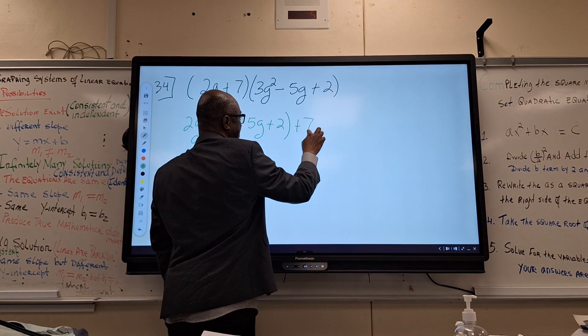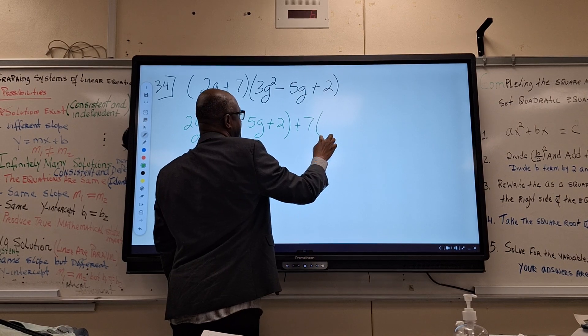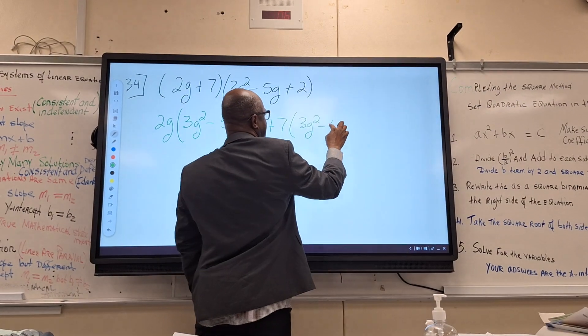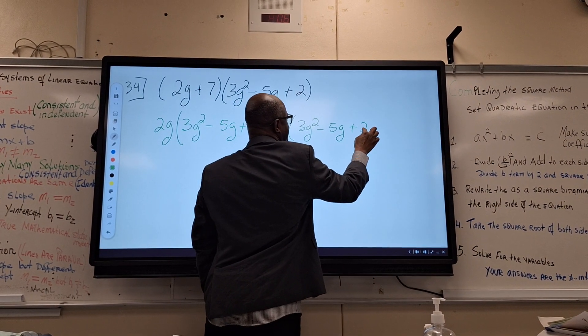Plus 7 times 3G squared minus 5G plus 2.